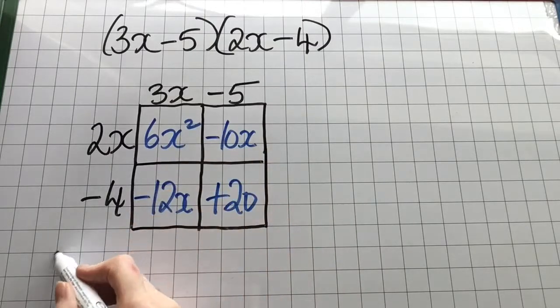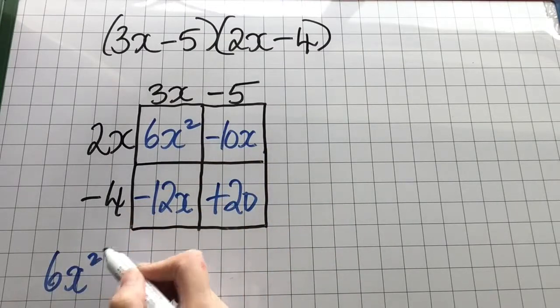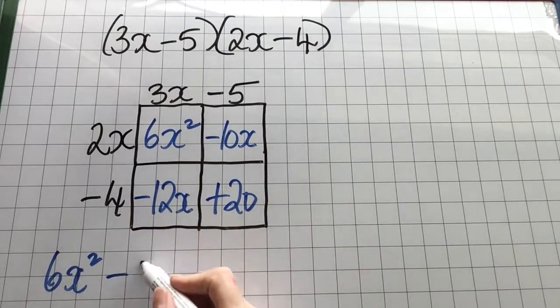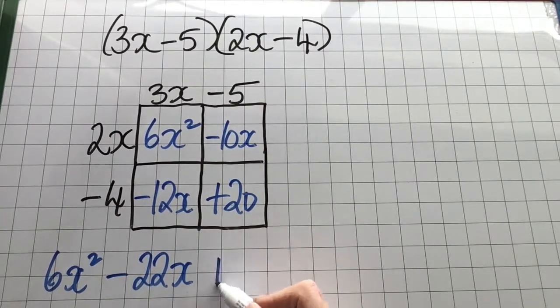And now simplifying means add up like with like. 6x squared minus 22x and plus 20.